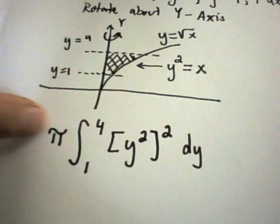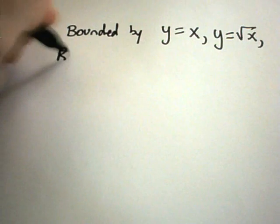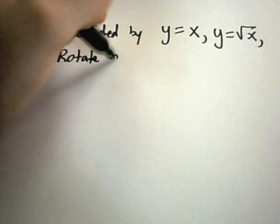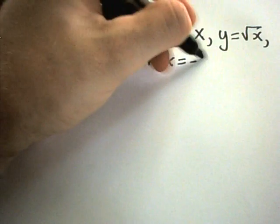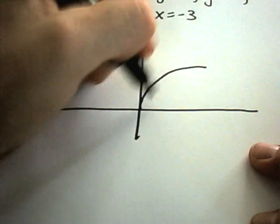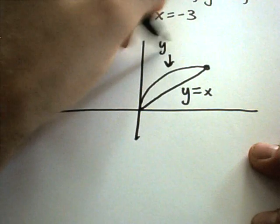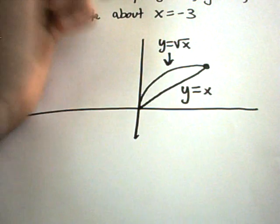So let me do one more example of this, and this is where I'm going to use my old region as before. Let's use the region bounded by y equals x and y equals square root of x. And in this case, let's rotate about x equals negative 3. So again, I'm going to graph my region. We said y equals square root of x looks like that, and y equals x is this one. But again, remembering that we need the x's isolated.